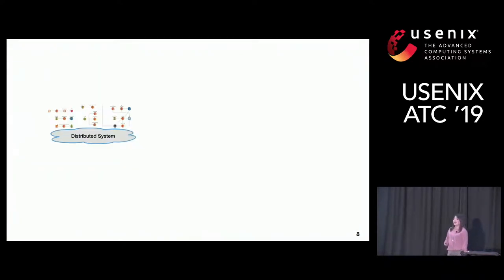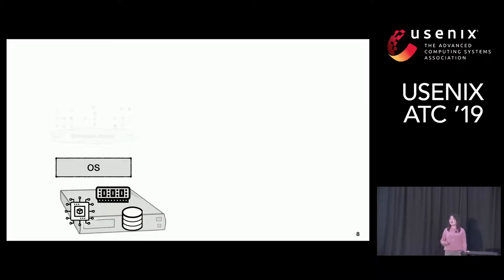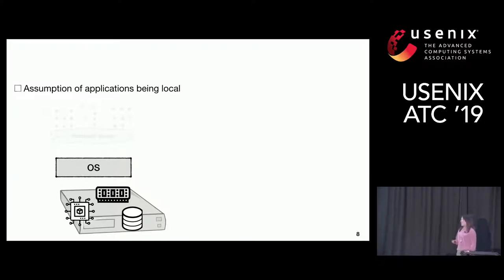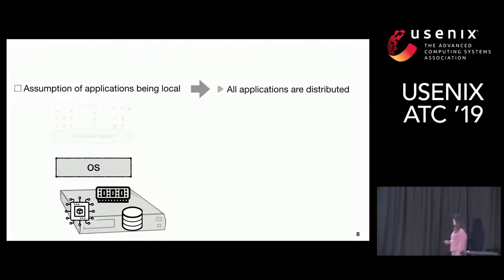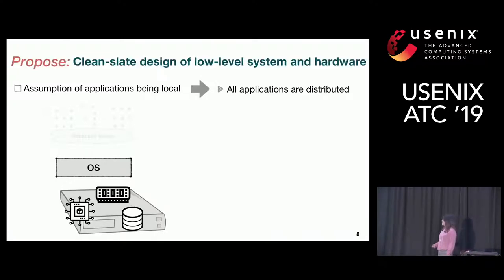What about the layers below distributed systems — OS and hardware? These layers, unfortunately, for decades have been built with the assumption that every application is essentially local. But if you look at applications in data centers now, they are distributed. Are we actually working with the wrong assumption for these lower-level systems?